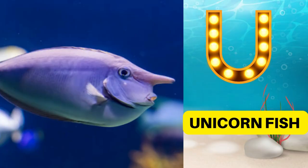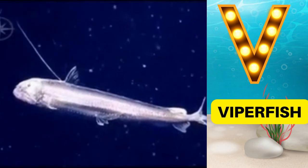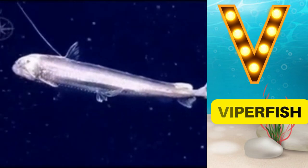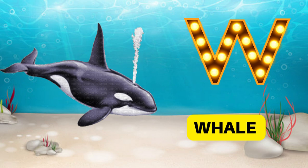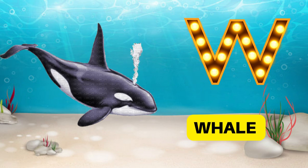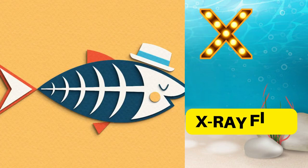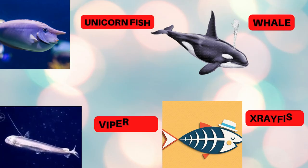U is for unicorn fish, uuh unicorn fish. V is for viperfish, v v viperfish. W is for whale, wuh wuh whale. X is for x-ray fish, x x x-ray fish.